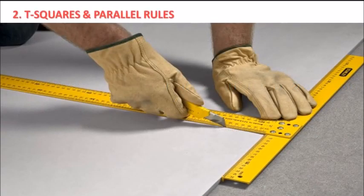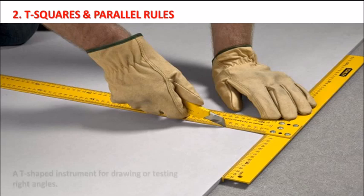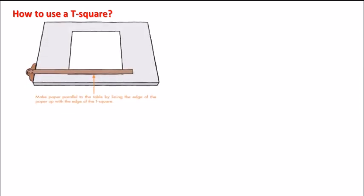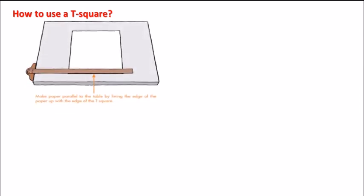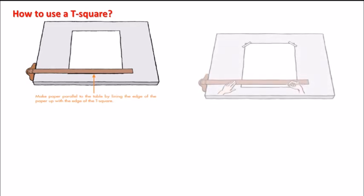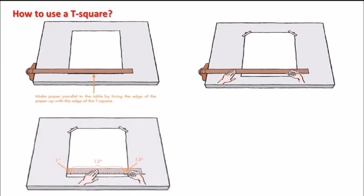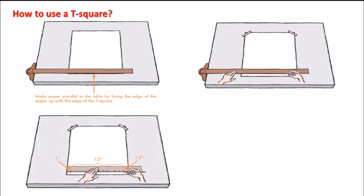We have T-squares and parallel loop rules. They are used for testing right angles. Now let's see how to use a T-square. First, make the T-square parallel to the edge of the paper. Then draw a line leaving a margin. You can set the required length you want.